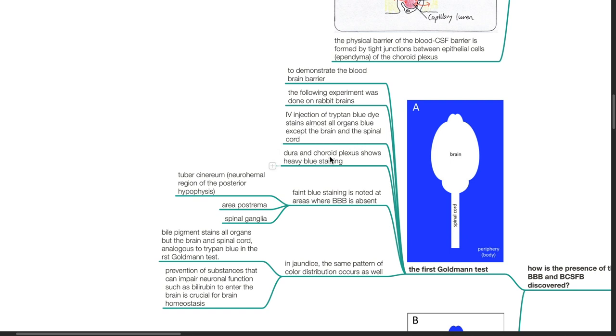The dura and choroid plexus show heavy blue staining. Faint blue staining is noted at areas where the blood-brain barrier is absent. For example, the spinal ganglia, area postrema, and the posterior pituitary.